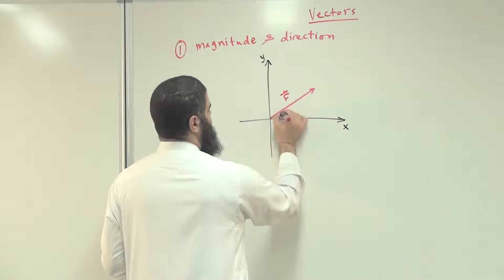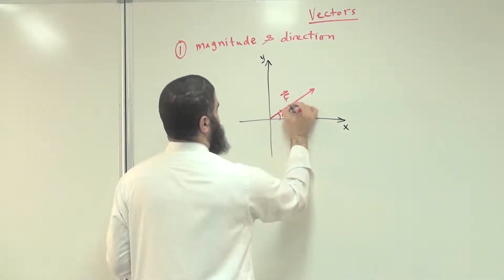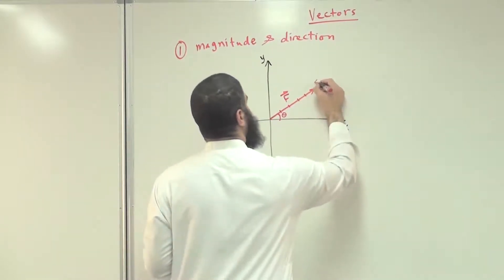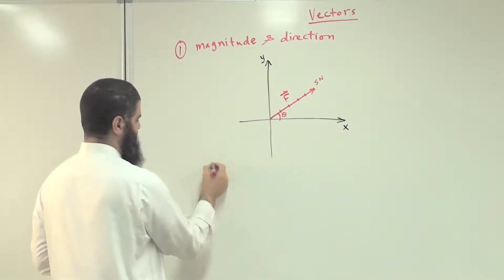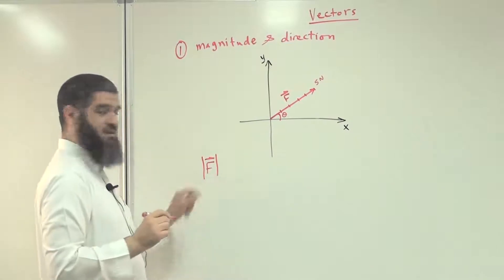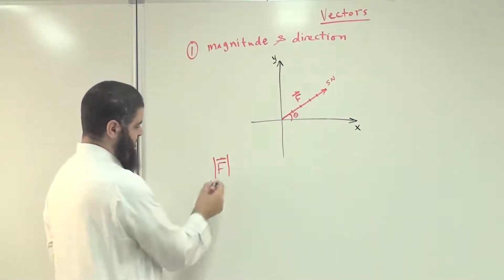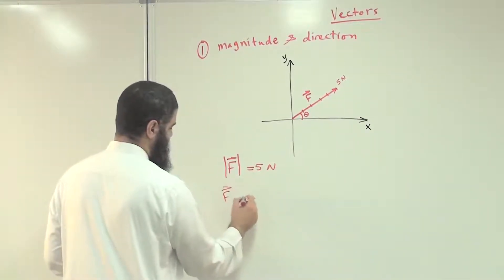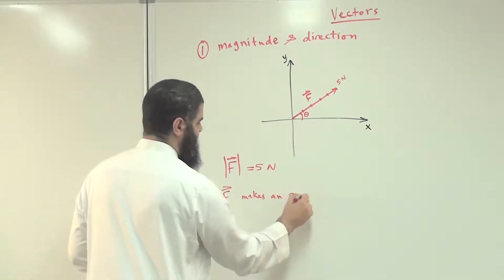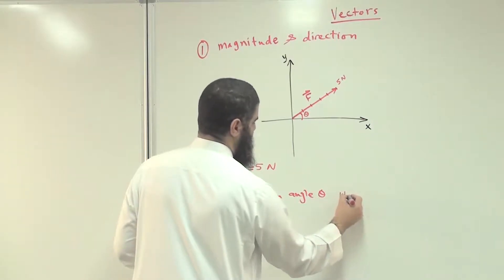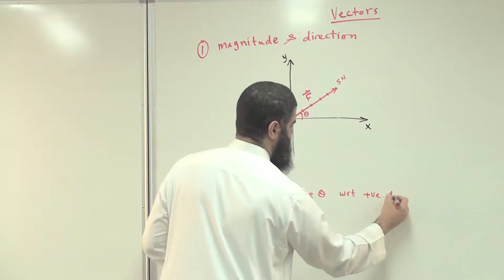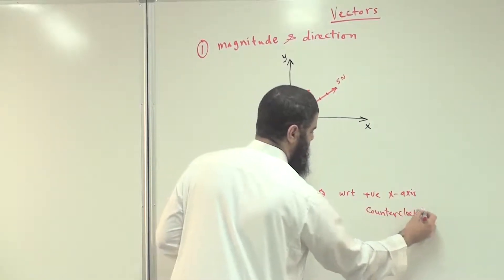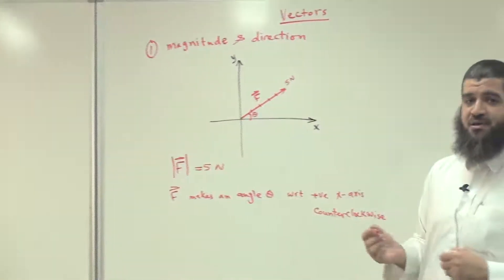If we assume that each one centimeter represents 1 newton of force, then counting 1, 2, 3, 4, 5 — this is 5 newtons. We can write the magnitude using two parallel lines, as you learned in math courses, so the magnitude of F is 5 newtons. And we say that F makes an angle theta with respect to the positive x-axis, measured counterclockwise. This is the first way of representing vectors.